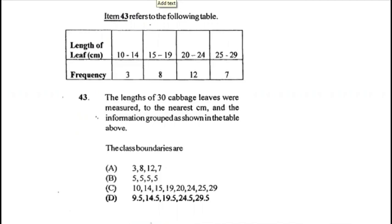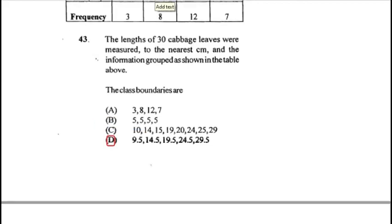Question 43: the length of 30 cabbage leaves were measured to the nearest centimeter. Class boundaries are the endpoints of the class interval — 0.5 lower than the lower class interval and 0.5 higher than the upper class interval. For example, for the class interval 10–14, the class boundary would be 9.5 and 14.5. Answer for 43 is D.